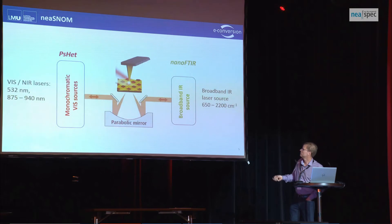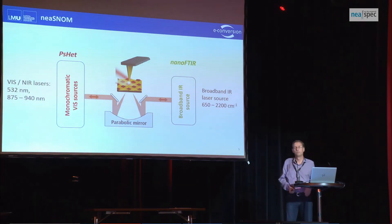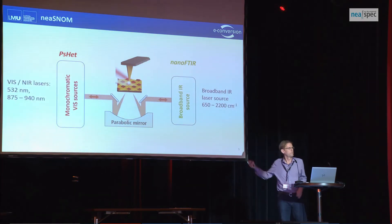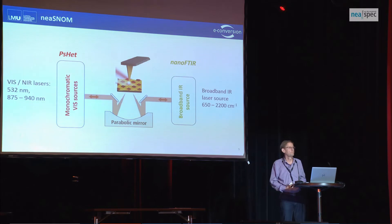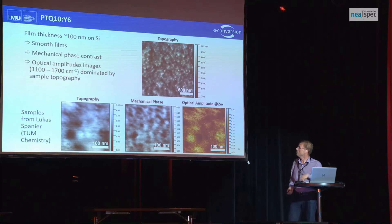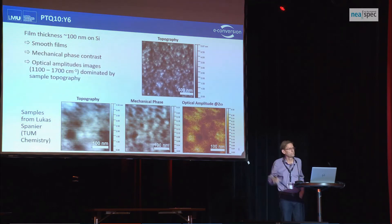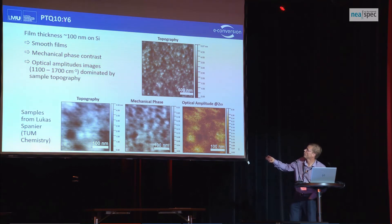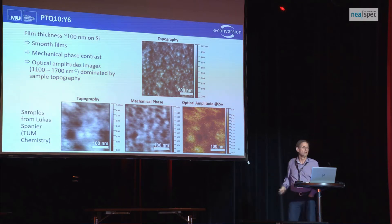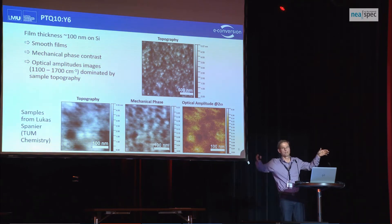We try to address this problem using our new NIA spec system in a standard configuration using a broadband IR laser source for nano FTIR, and on the other side we have different laser sources for doing PS-HET imaging. If you look at such a non-fullerene acceptor film — this sample is called PTQ10:Y6 — what you typically see is a rather smooth topography, with about five nanometers maximum amplitude variation on a two-by-two micron scan.